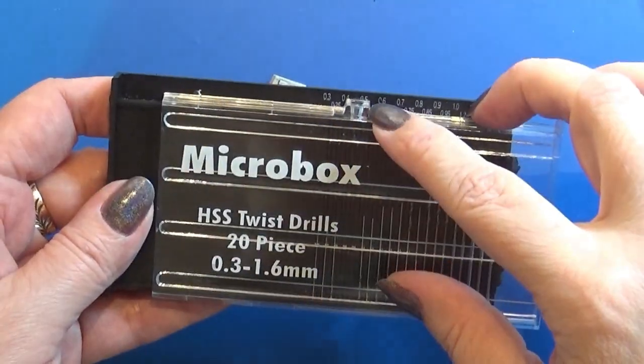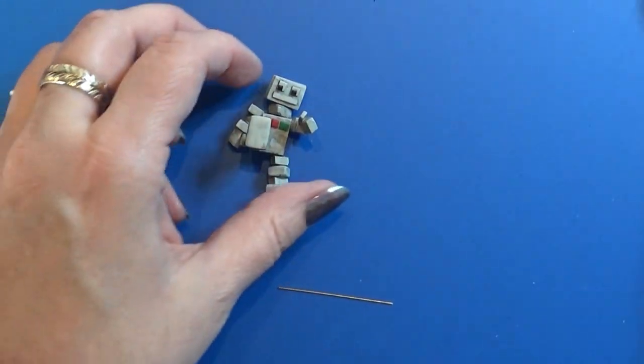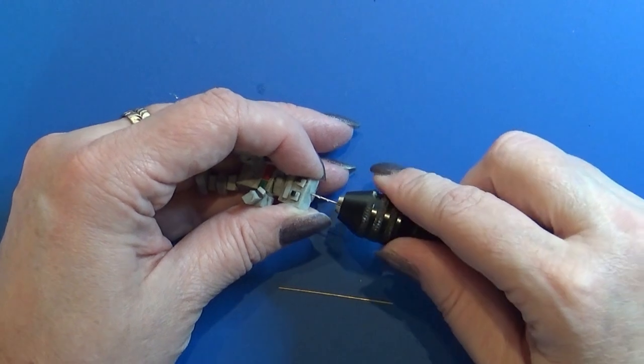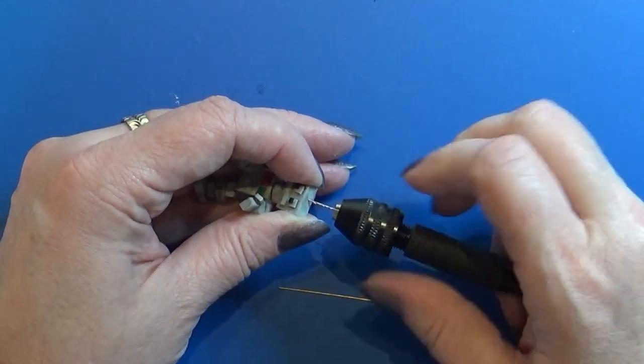I'm using a tiny nail art drill to drill a tiny hole in his head so I can put in a tiny piece of a flower wire as his antenna.